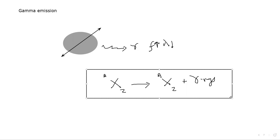So those are the three types of emissions — alpha, beta, and gamma — and the decay equations. Next, we need to learn the properties of these radiations.